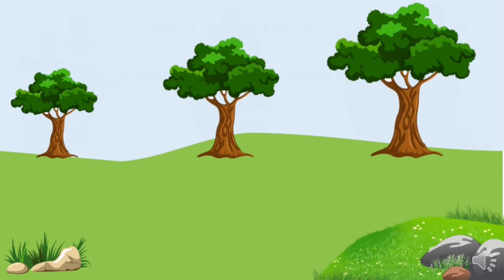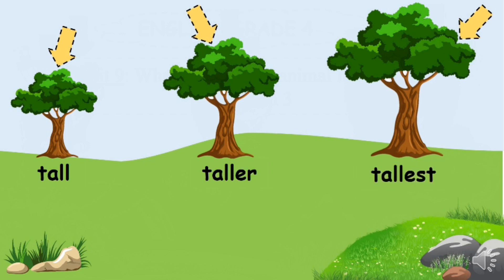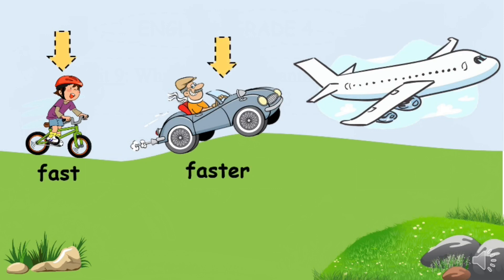Look at three trees here. The first one is tall, the second one is taller, and the last one is the tallest tree. Now look at three forms of transportation. The first one is fast, the second is faster, and the last one is the fastest transportation.